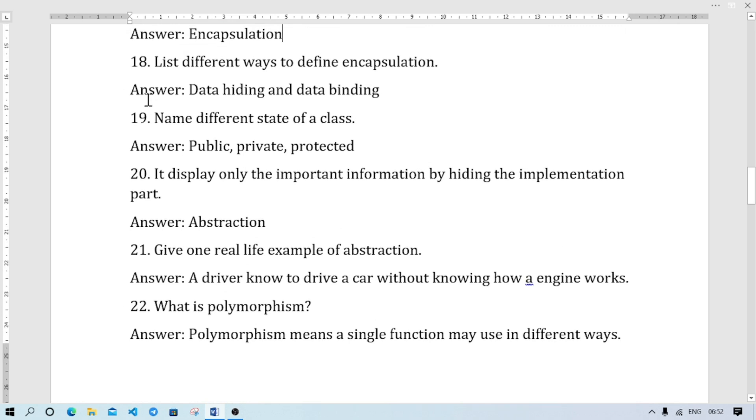Number 19: Different states of a class. A class can be public, private, or protected. Public means this class can be accessed by any other classes or functions within the program. And private means only that particular program can access. Protected will be required for higher classes. For now just remember the name.